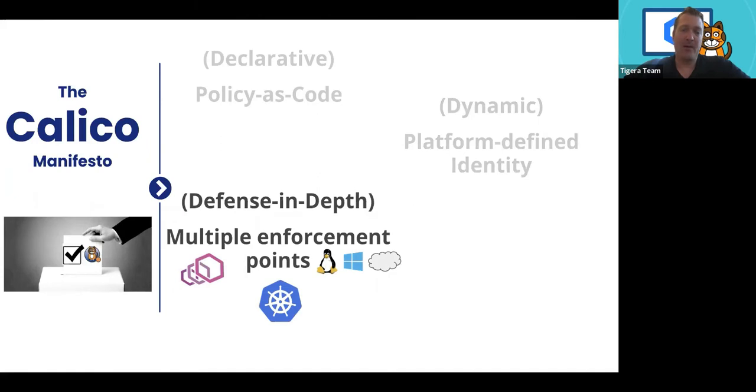We can talk about defense in depth as well. With Calico, it will evaluate the policies not only at the host layer but also at the pod, and what that does is provide you a deeper level of security in case something happens, like your Kubernetes cluster has been compromised or the host has been compromised. You get an additional enforcement point.